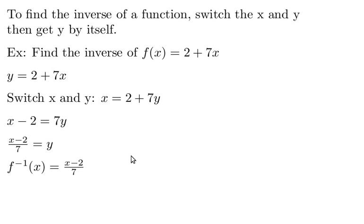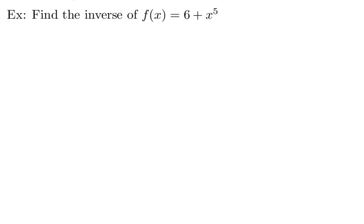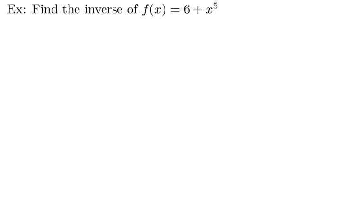Find the inverse of f(x) = 6 + x^5. So we want to go ahead and write this in the form of y instead of f(x). So we have that y = 6 + x^5.